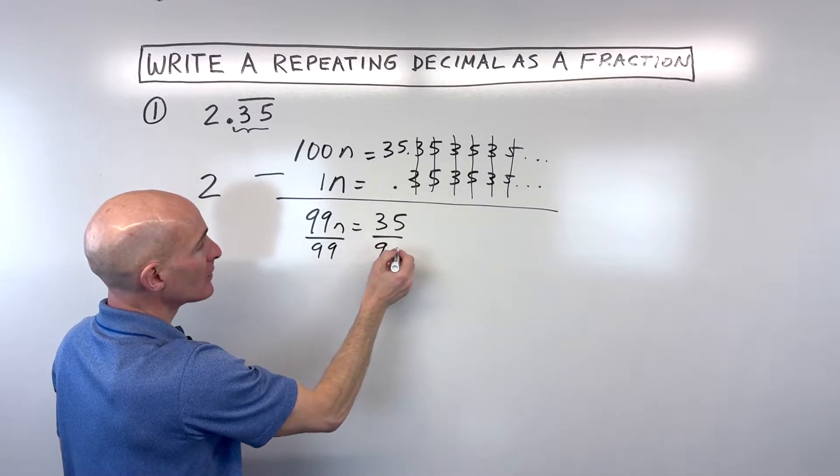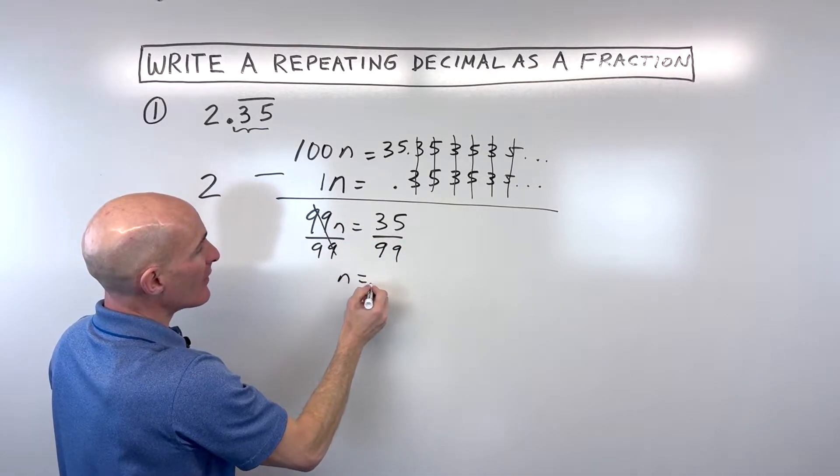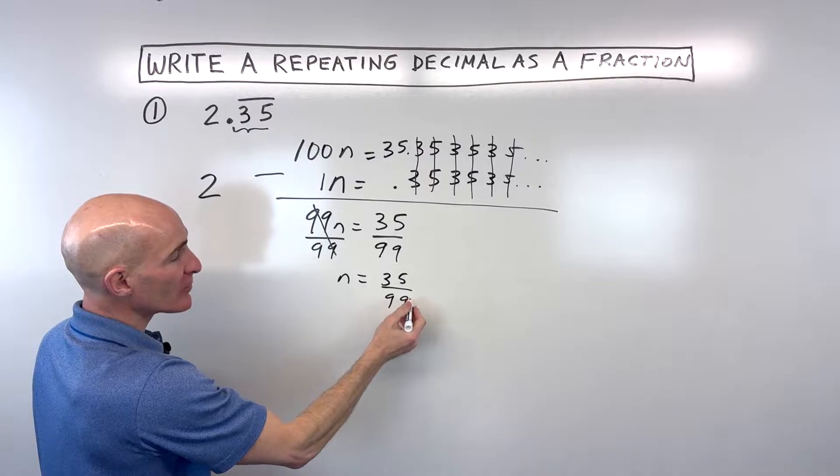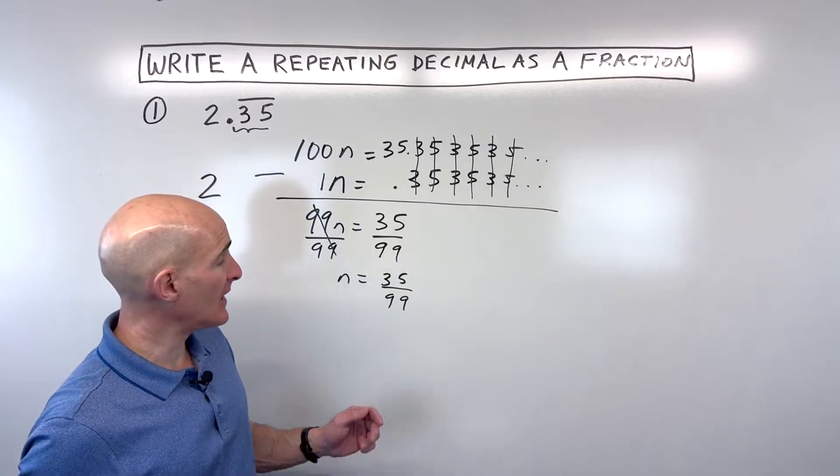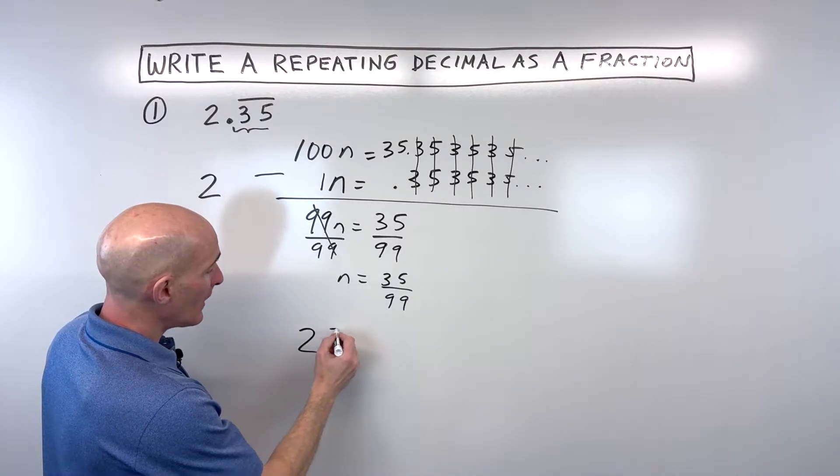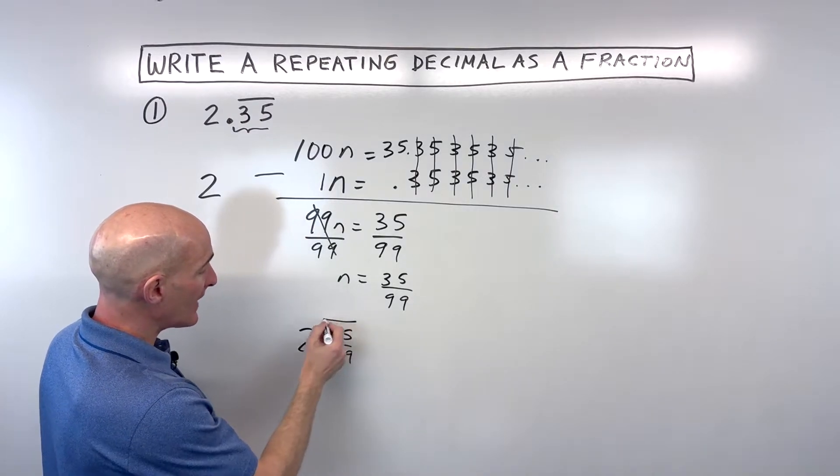Then we can divide both sides by 99 to solve for n, our number. And let's see, now we have n equals 35 over 99. Now you can try to reduce this down, but it doesn't look like there's anything that goes into 35 and 99 evenly.